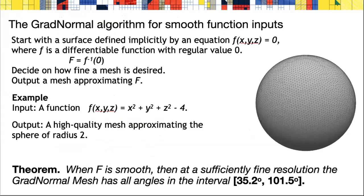We're going to be talking about a new algorithm to produce such meshes called the GradNormal algorithm. The surface can come in various forms. Let's first talk about when the surface is given by a mathematical formula, f(x,y,z) equals zero. The surface is given by the level set zero of this function.